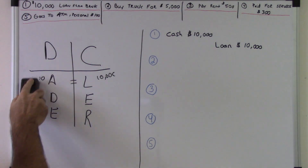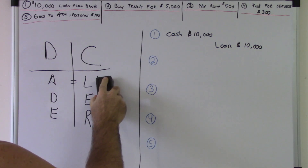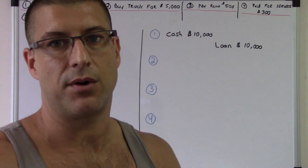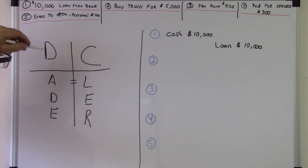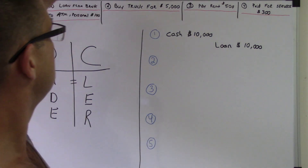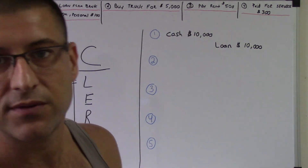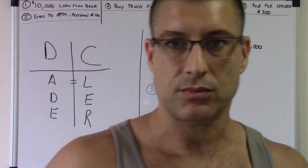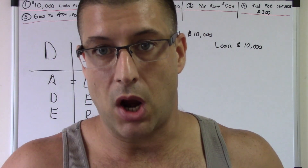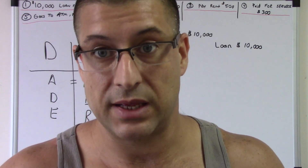Alright, second one. Let's erase this. Now this one might throw you off because these are the positive sides — positive debits, positive credits. So let's go to the second transaction: buy a truck for five thousand dollars. Are you getting more money or are you getting less money?